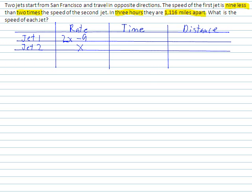And then from the problem, if you come up here, you can see 3 hours. It says in 3 hours they are 1,116 miles apart. So for time, you can put 3 hours for both jet 1 and jet 2. And then to get distance, you can just multiply across.